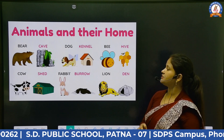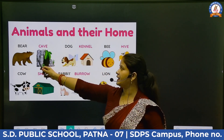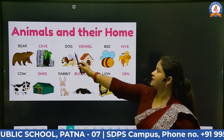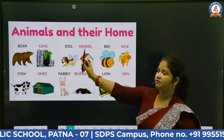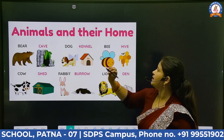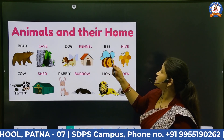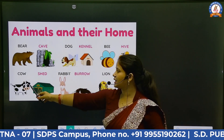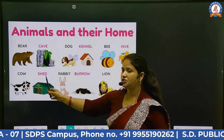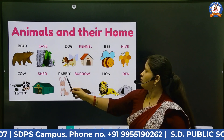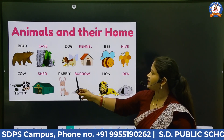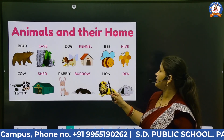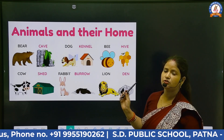So now let's review. Where does bear live? Cave. Where does dog live? Kennel. Where does bee live? Hive. Where does cow live? Shed. Where does rabbit live? Burrow. And where does lion live? Den.